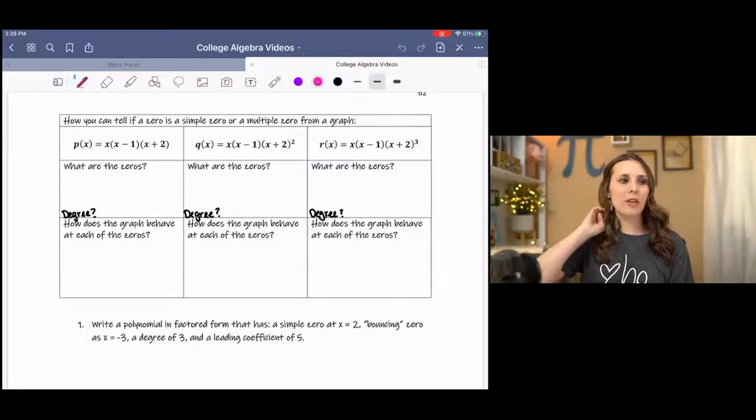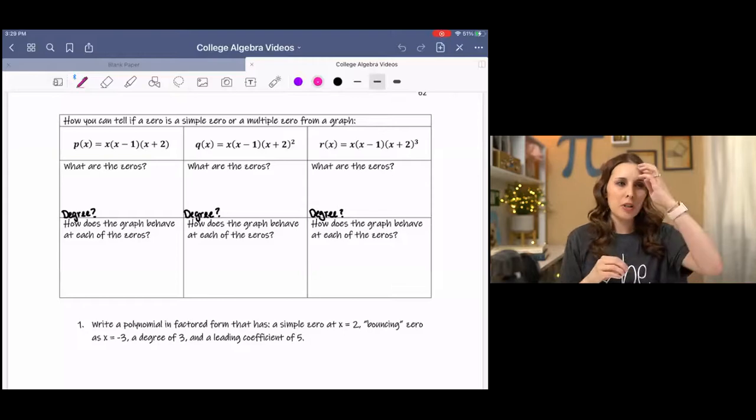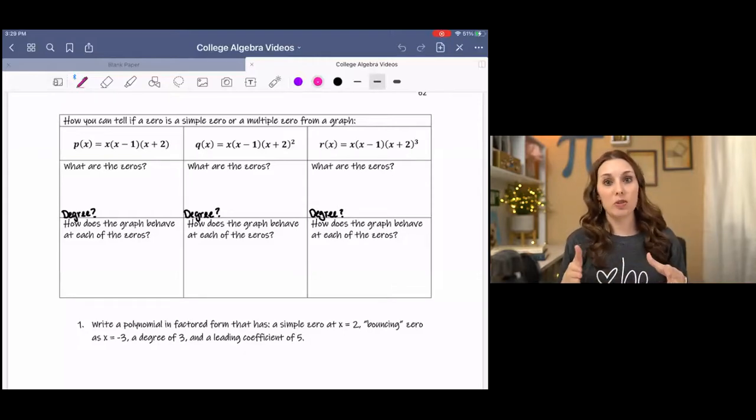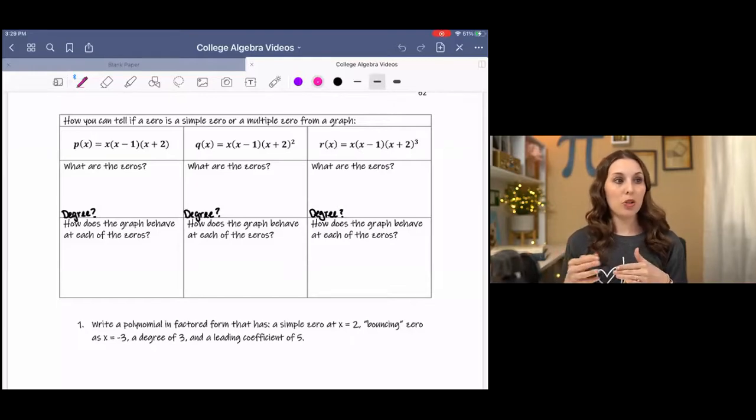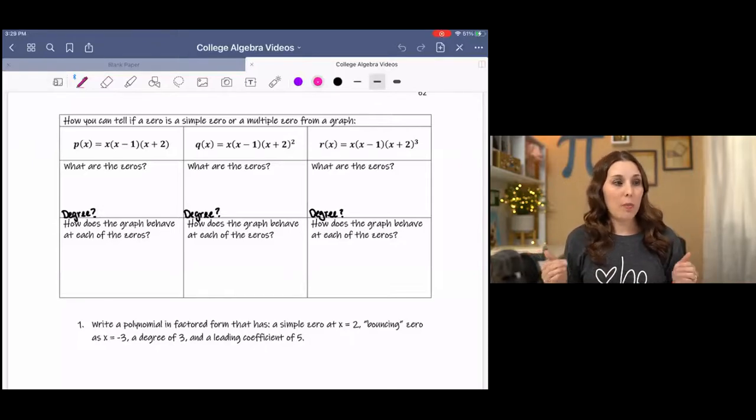Hey y'all, in this lesson I'm going to be showing how to find the zeros of a polynomial by looking at the equation and the graph. I have a couple different examples here and they all look a little bit similar in that they all have the same factors. So each of them has x, x minus 1, and x plus 2, but you'll notice that maybe the exponents on those factors differ a little bit. So we're going to be kind of comparing what the graph looks like at each x-intercept to explore maybe what's happening.